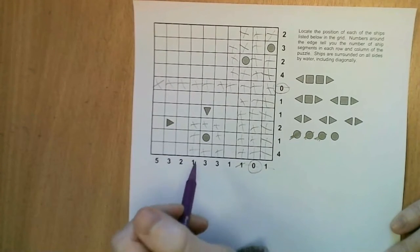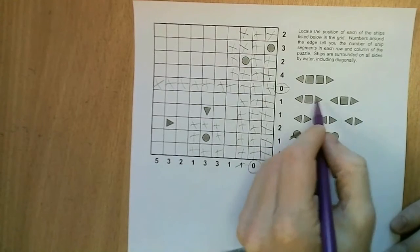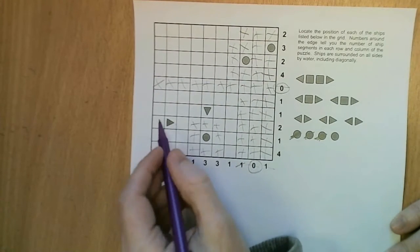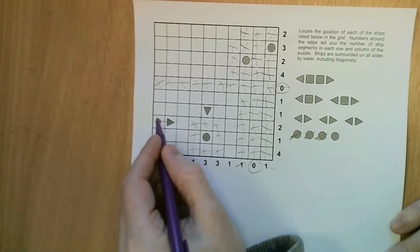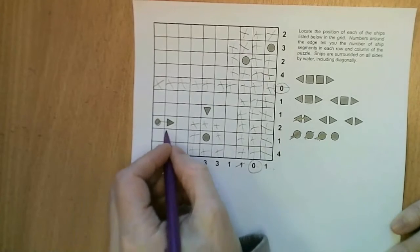Now with the orientation of this triangle we can see it can't be a three or four length ship because it's the edge of the boat, so therefore it must consist of two squares, so it's like this and that's placed.